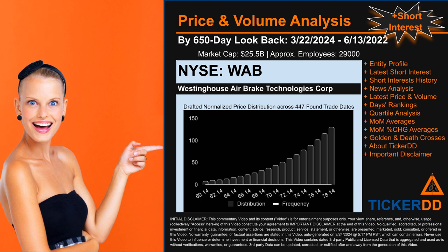WAB went public on June 16, 1995, which was roughly 28 years and nine months ago. Looking back 650 calendar days from Friday, March 22nd, 2024, to Monday, June 13, 2022, we found 447 applicable trade dates for use in our analysis of this ticker, which has a market capitalization of about $25.5 billion.